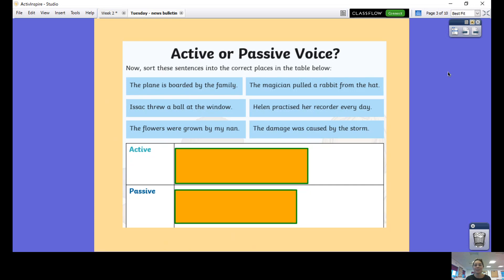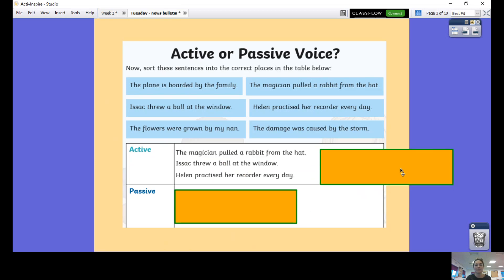Let's have a look at some of those answers then. All of our active sentences are here: the magician pulled a rabbit from the hat - we've got subject, verb, object there. Isaac threw a ball at the window. Helen practiced her recorder every day.